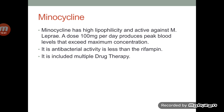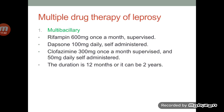The next antibiotic used against Mycobacterium leprae is minocycline. It has high lipophilicity — that is, it is a highly lipid soluble drug — and 100 mg daily dose produces peak blood levels that can exceed the minimum inhibitory concentration. Its antibacterial activity is less than rifampicin and it is also included in multi-drug therapy. Multi-drug therapy of leprosy includes rifampicin, dapsone and clofazimine: rifampicin 600 mg once a month, dapsone 100 mg daily, clofazimine 300 mg once a month supervised and 50 mg daily self-administered. The duration is 12 months or it can be 2 years.